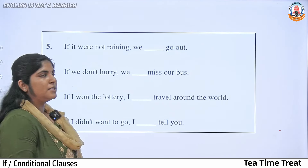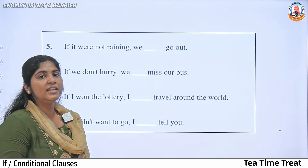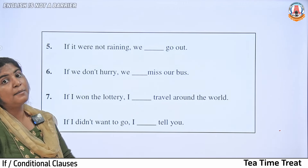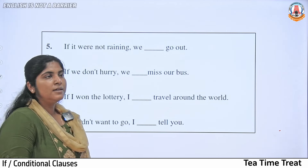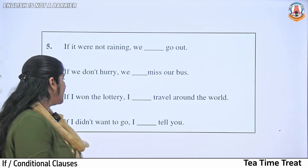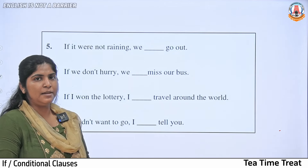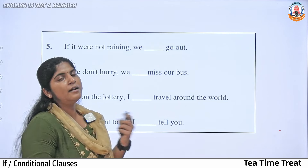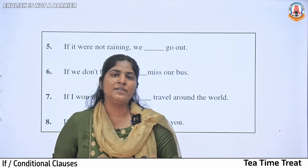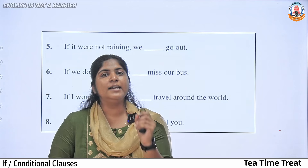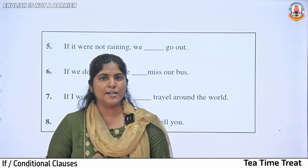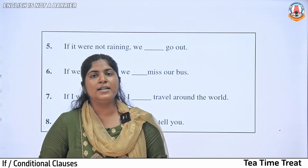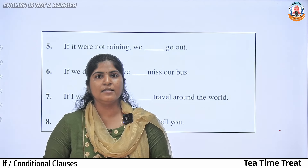'If I won the lottery, I would travel around the world.' And: 'If I didn't want to go, I would tell you.' Based on the rules we have seen, identify the type of conditional sentence for each and post your answers in the comment section — we will discuss them in the next class. Until then, keep learning and keep practicing. Thank you, have a great day.